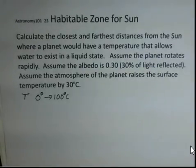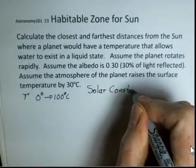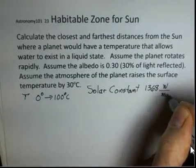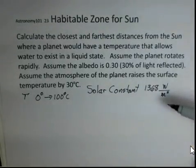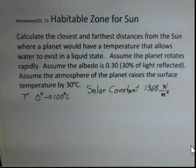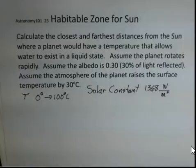At the Earth, we have something called the solar constant that has a value of 1368 watts per square meter. We will account for what's called the albedo of a planet. Albedo is the fraction of light that's reflected and not absorbed.